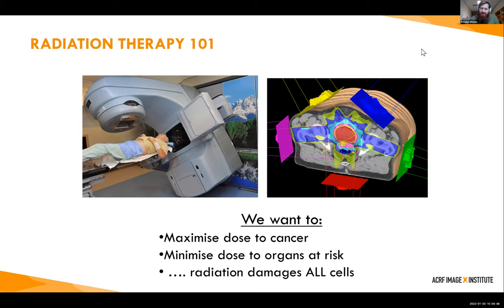In external beam radiotherapy we deliver a series of beams to the patient. Our goal is to get a large amount of dose into the tumor and to minimize the dose everywhere else. Of course radiation damages healthy cells as well as cancerous cells, so it's very important to maximize the dose in the cancerous cells. To do this we need to be able to produce a suitable treatment beam — that's the topic of my talk today.